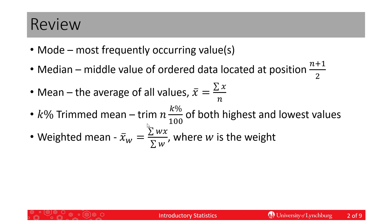We take the data, put it in order from smallest to largest, and find the middle value. If there's an odd number of values in the sample, we take the middle value. If there's an even number, we take the two middle values and average them.